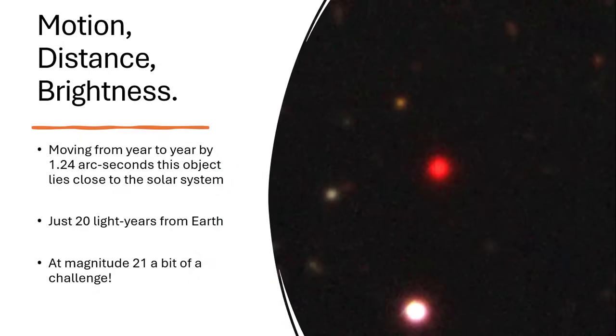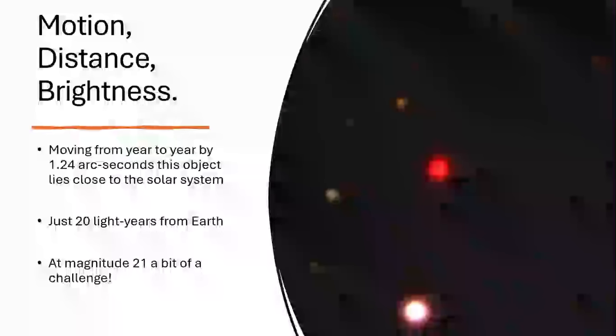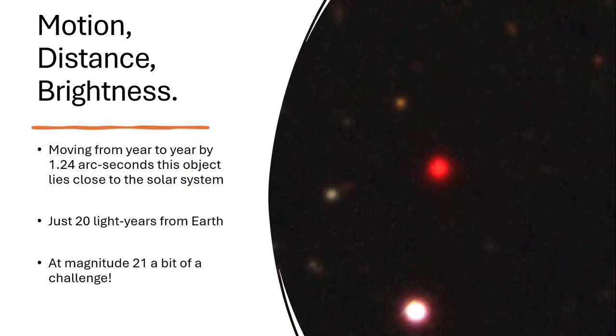It's moving, changing its position by over one arc second every year. As we observe the precise location from year to year, we can see that this means it must be close to the sun. In fact, parallax methods of measurement using the Earth's orbit as a baseline give us a figure of around 20 light years.